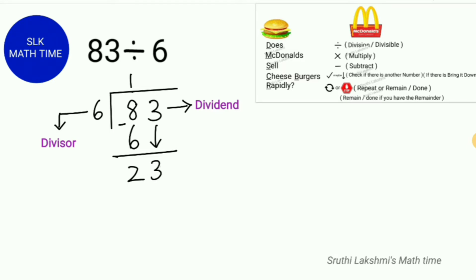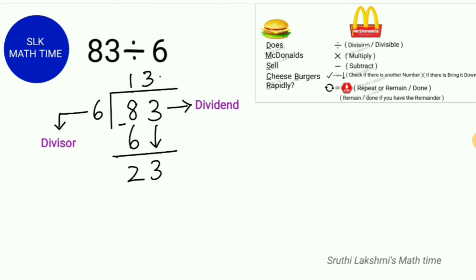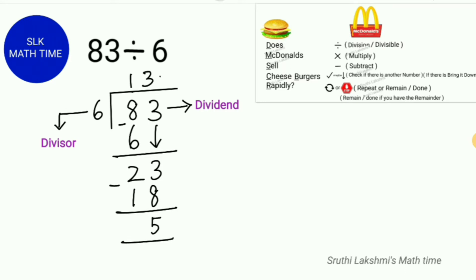So we bring it down. We repeat this process since there's another number. Is 23 divisible by 6? Yes — 23 is divisible by 6 three times. So we multiply 6 times 3, which is 18.